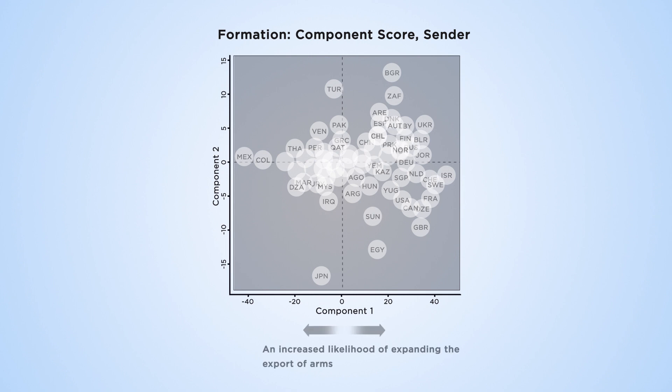For example, a high score for component 1 shows countries with a high tendency to export arms, and a high score for component 2 exhibits countries which have increased their exports over time.